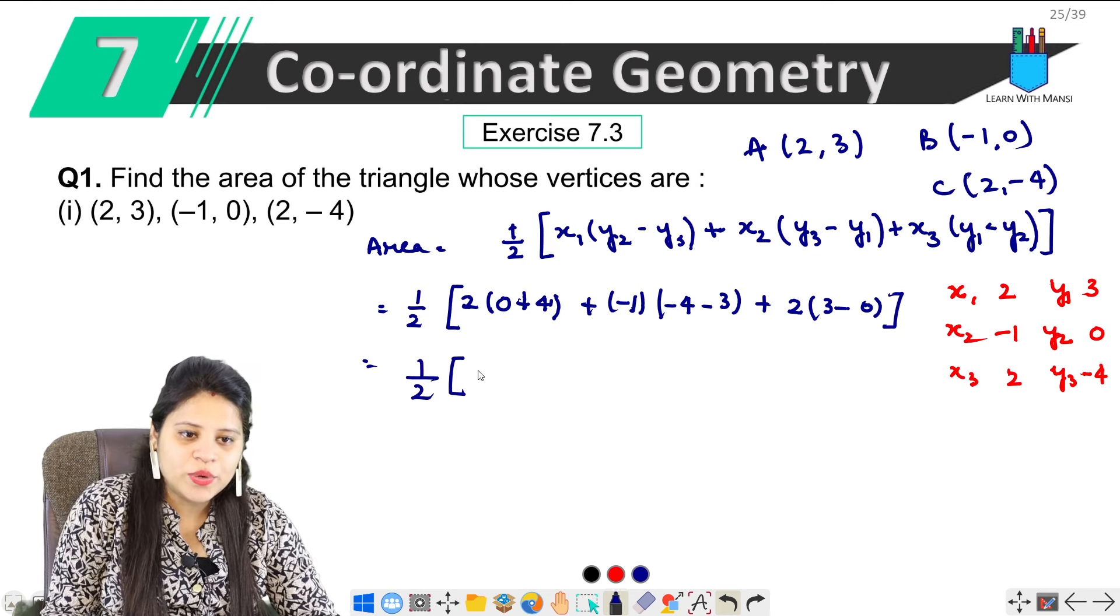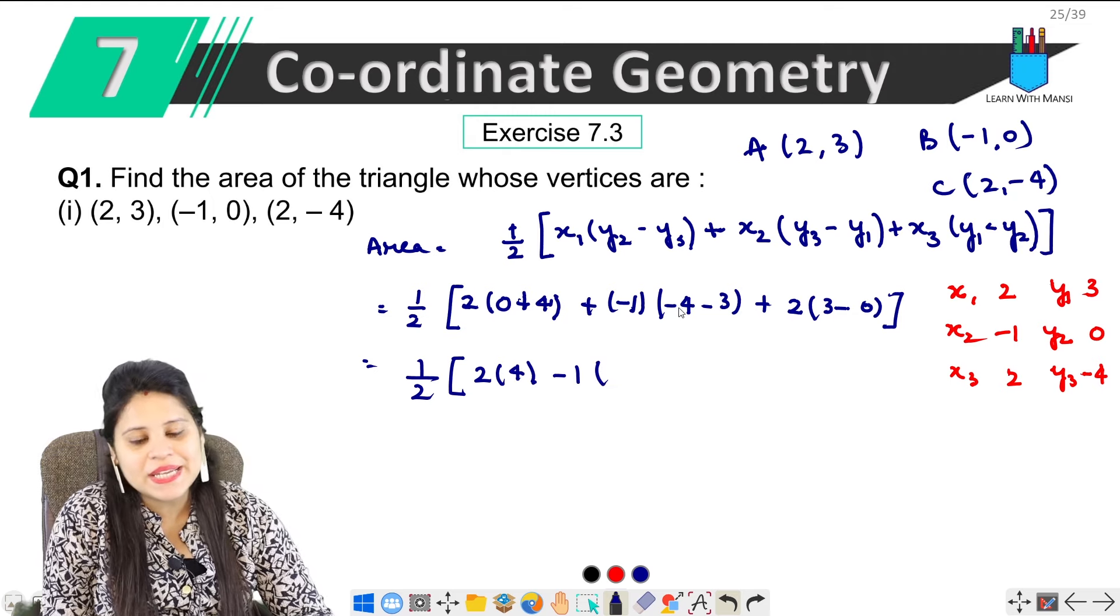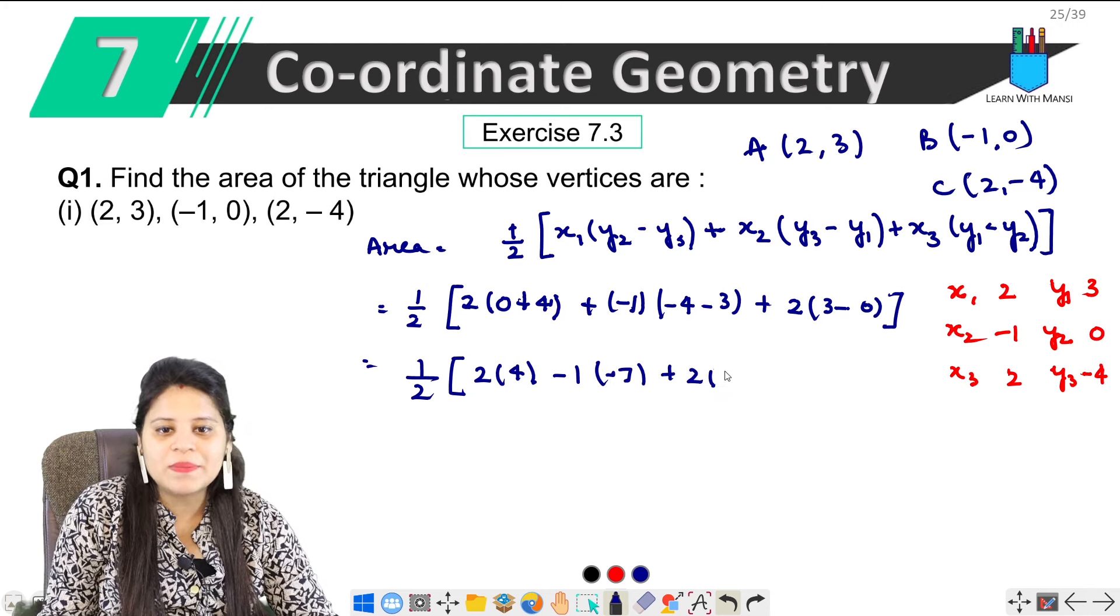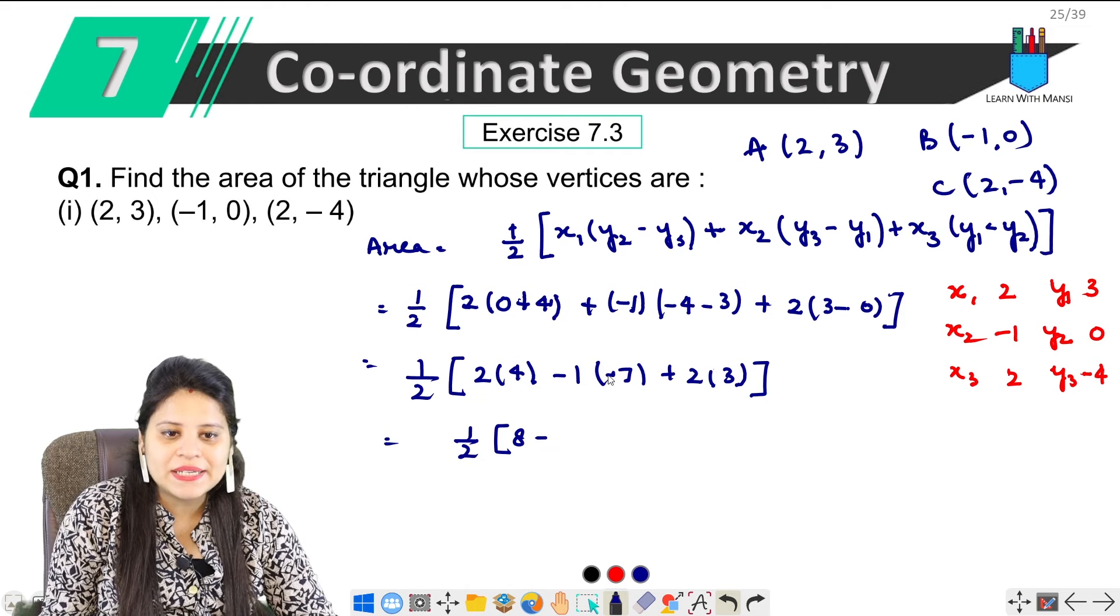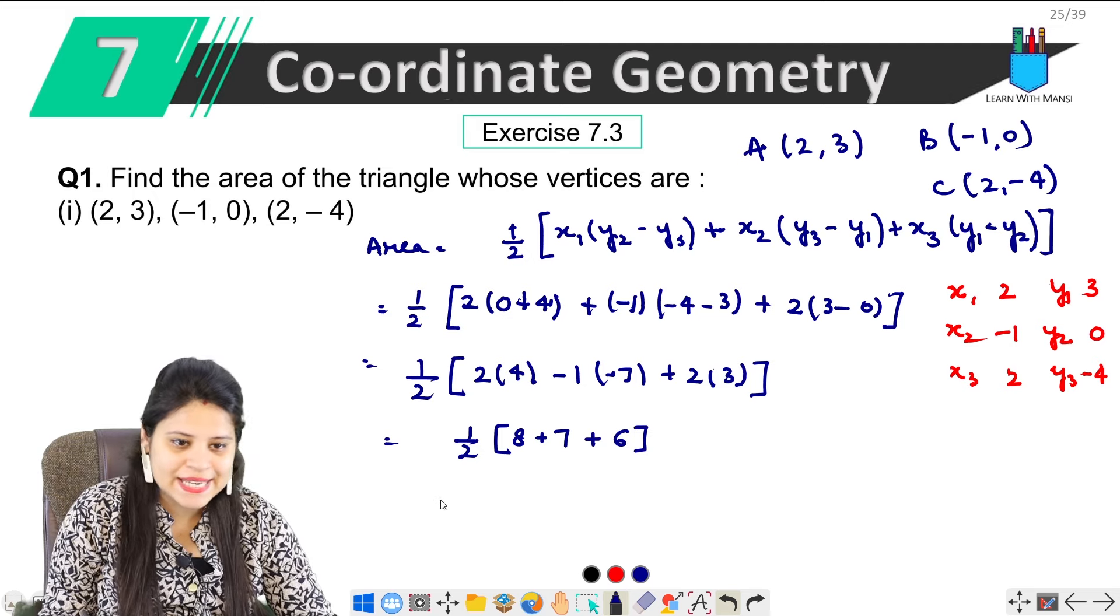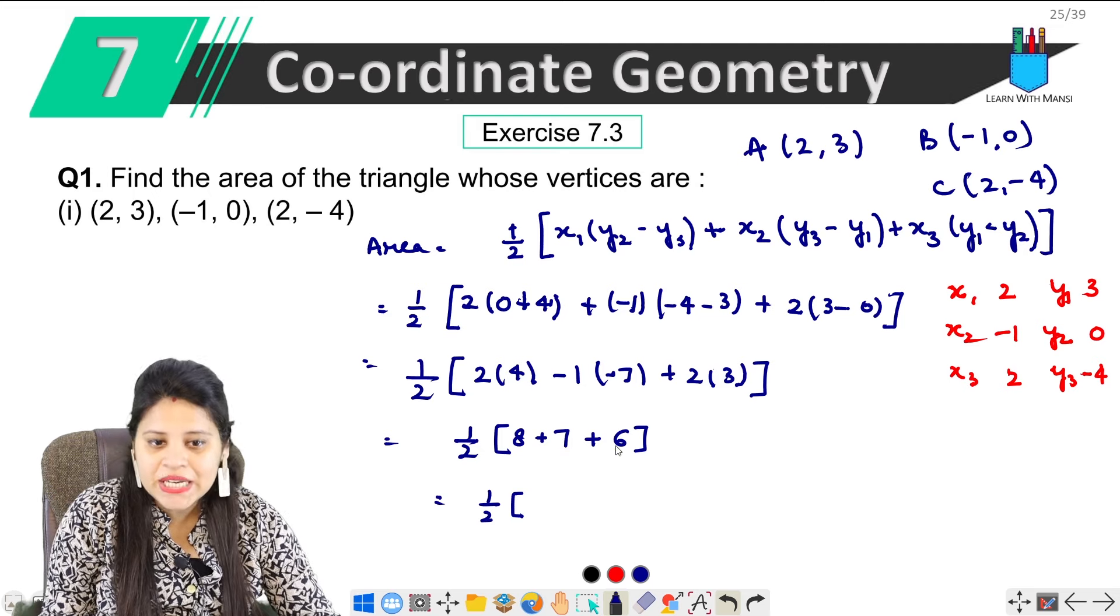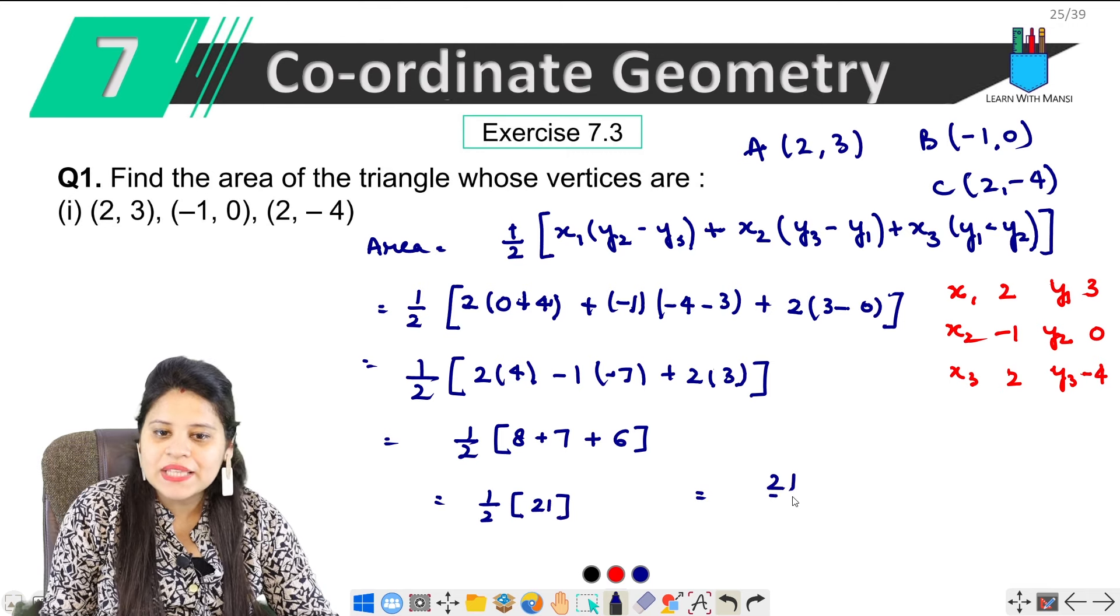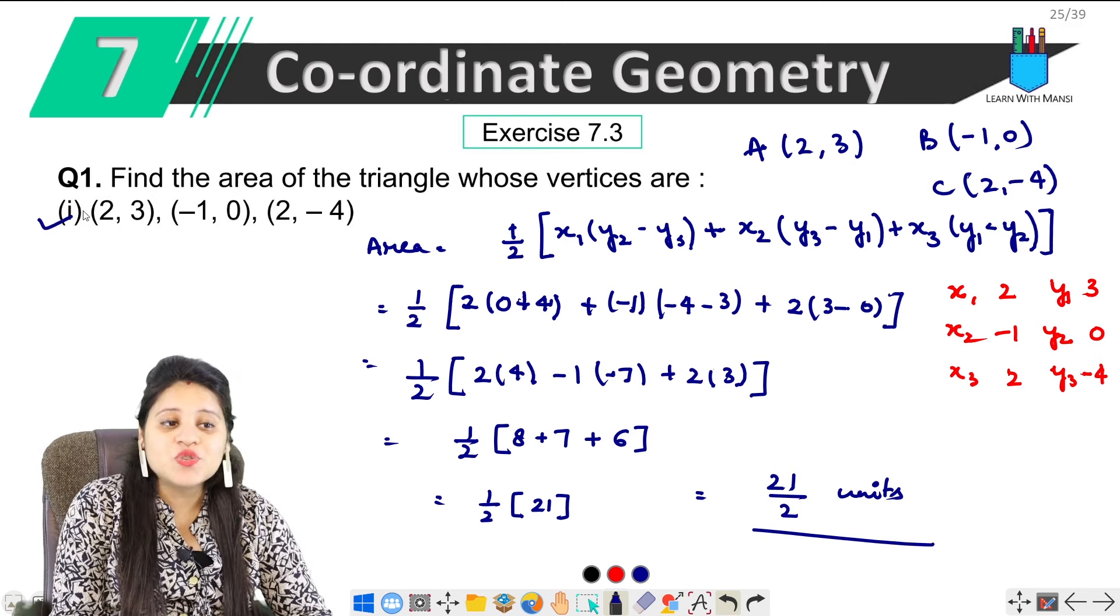Solve it. This is 1 upon 2. This is 2 times (0 plus 4 is 4). Then, minus 1 times (minus 4 minus 3, which is minus 7). Then plus 2 times (3 minus 0 is 3). So, here we have 1 upon 2 times [8 plus 7 plus 6]. That equals 1 upon 2 times 21, which is 21 upon 2 square units. This is our area. This was the first part of this question.